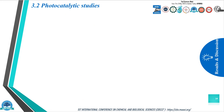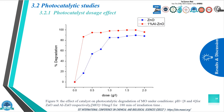Finally, we investigate the photocatalyst dosage effect. The impact of dosage was investigated under the optimum conditions previously studied. The degradation rate increases rapidly as the catalyst dosage increases, reaching its maximum at 1 gram per liter and 1.5 grams per liter for aluminum-doped zinc oxide and zinc oxide respectively, and it slightly decreases afterwards.